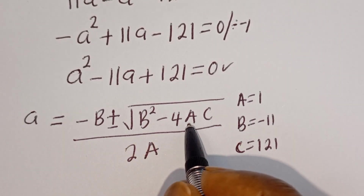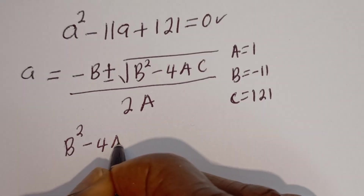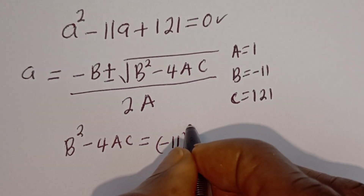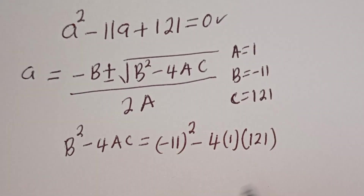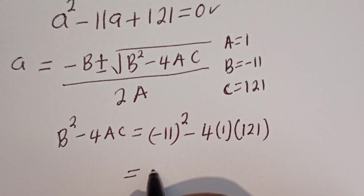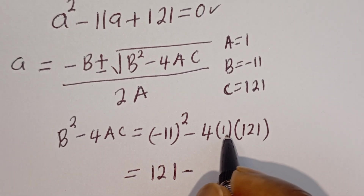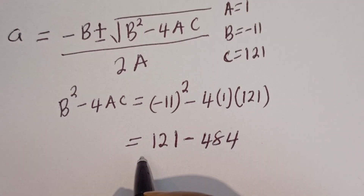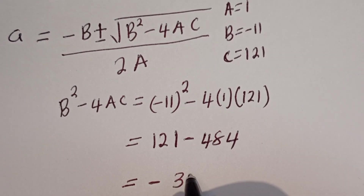Now let's consider B squared minus 4AC, which is the discriminant. B squared minus 4AC is equal to minus 11 squared minus 4 multiplied by 1 multiplied by 121. This is 121 minus 4 multiplied by 1 multiplied by 121, which is 484. Then if you subtract 121 from 484, you get minus 363.